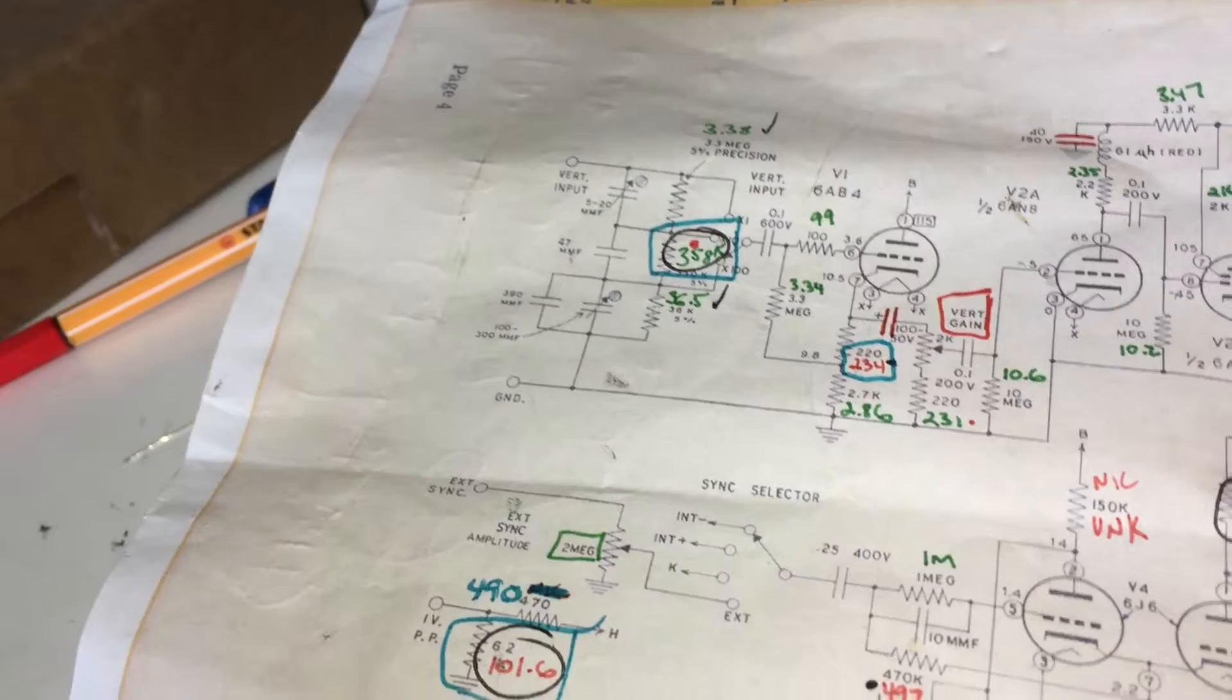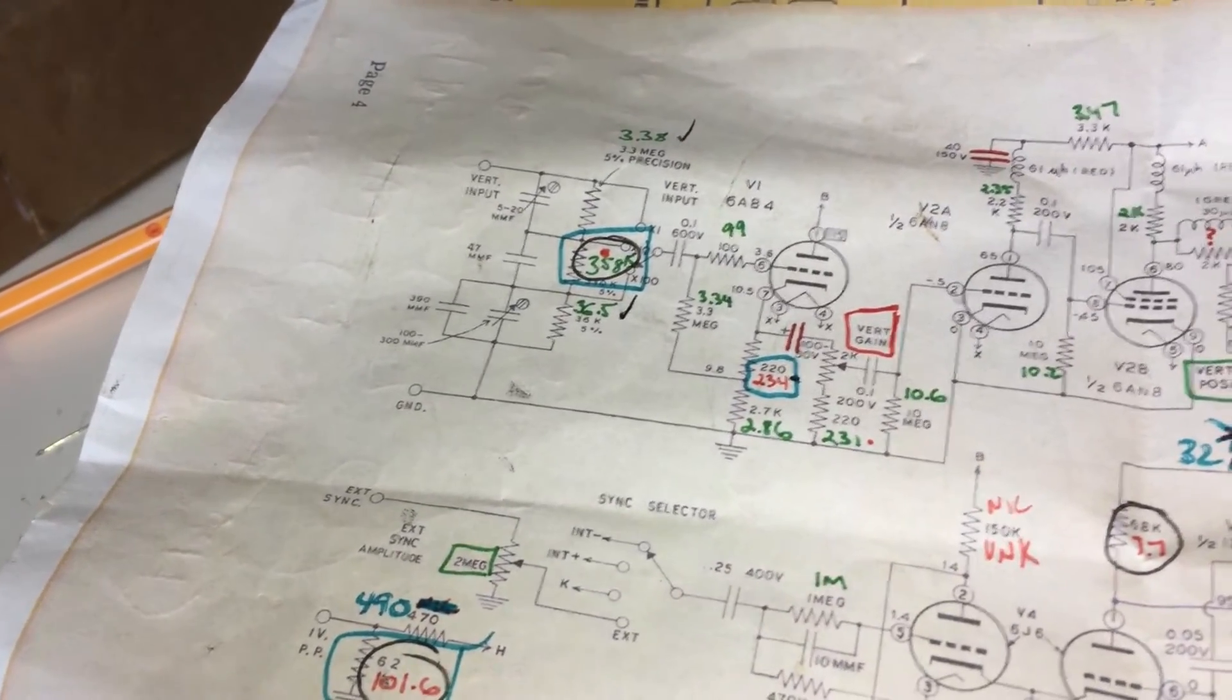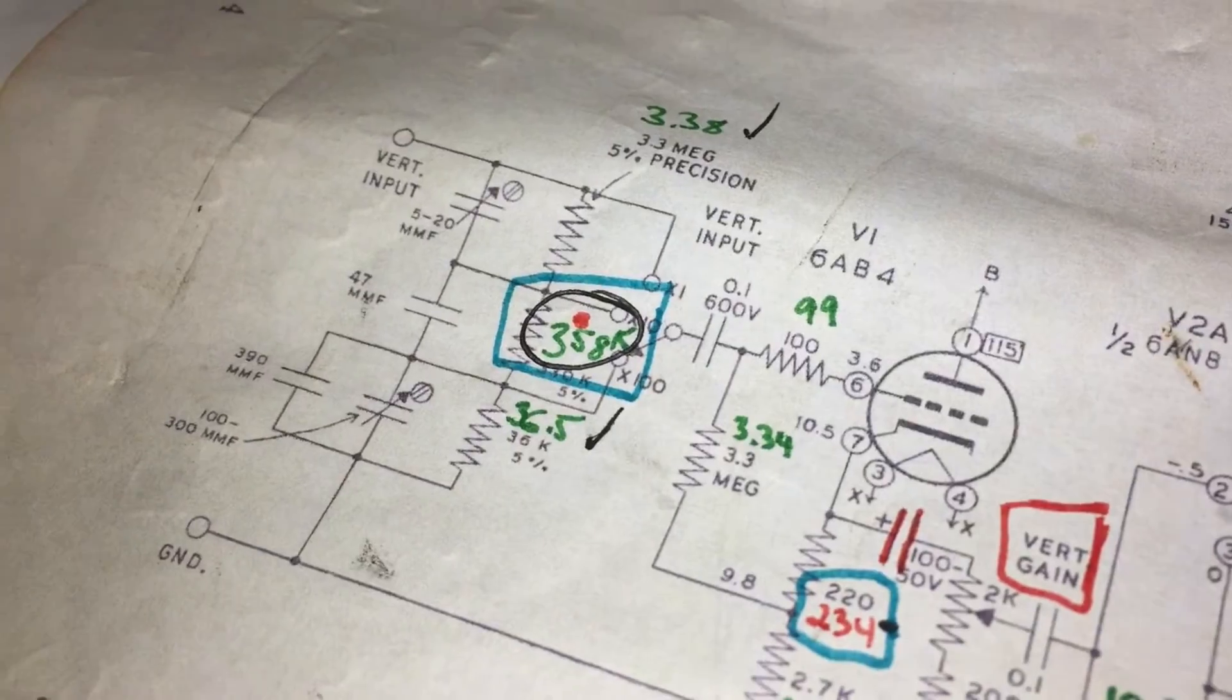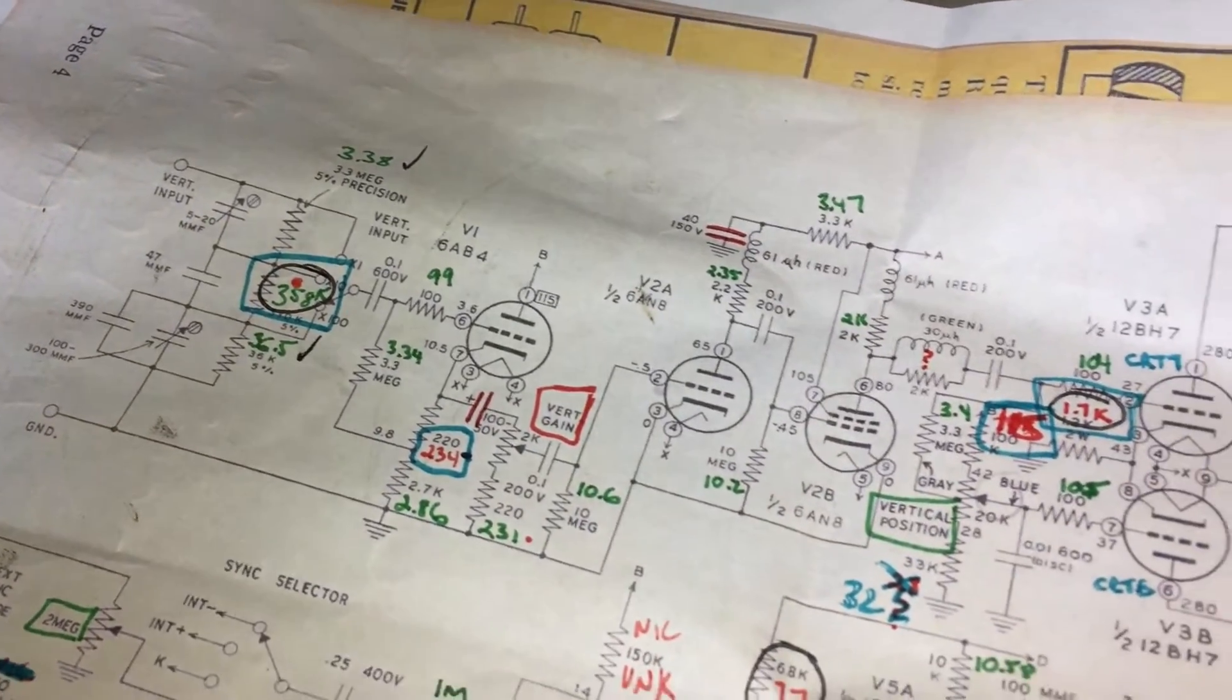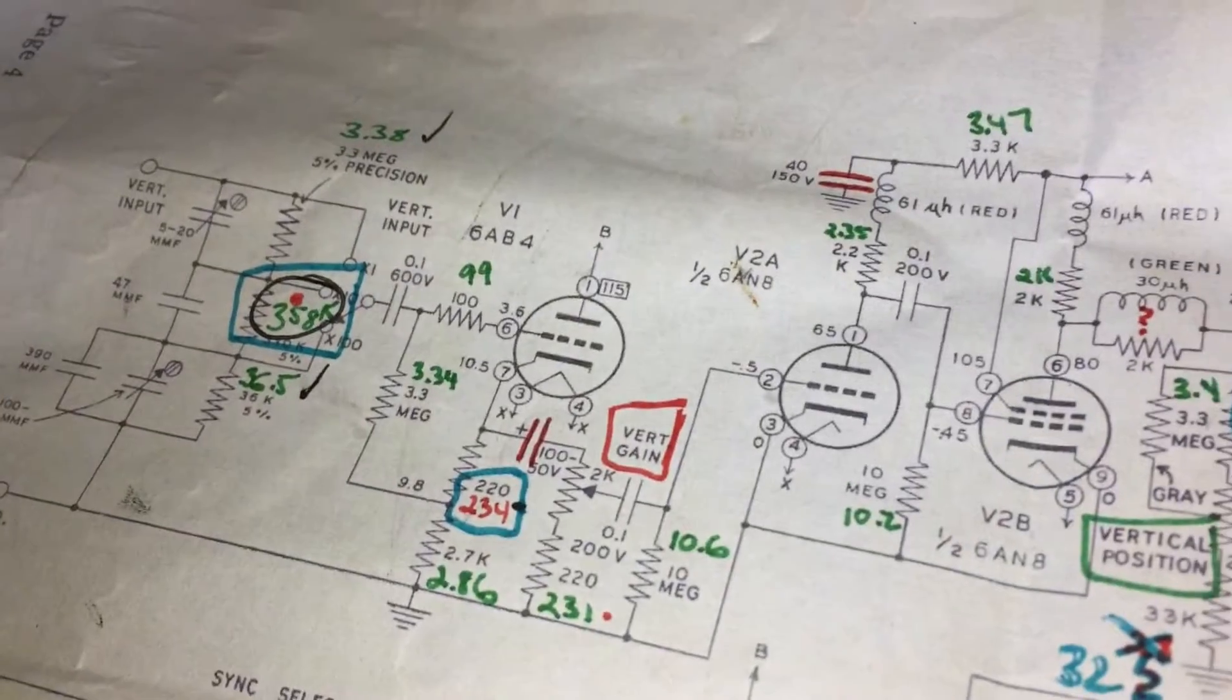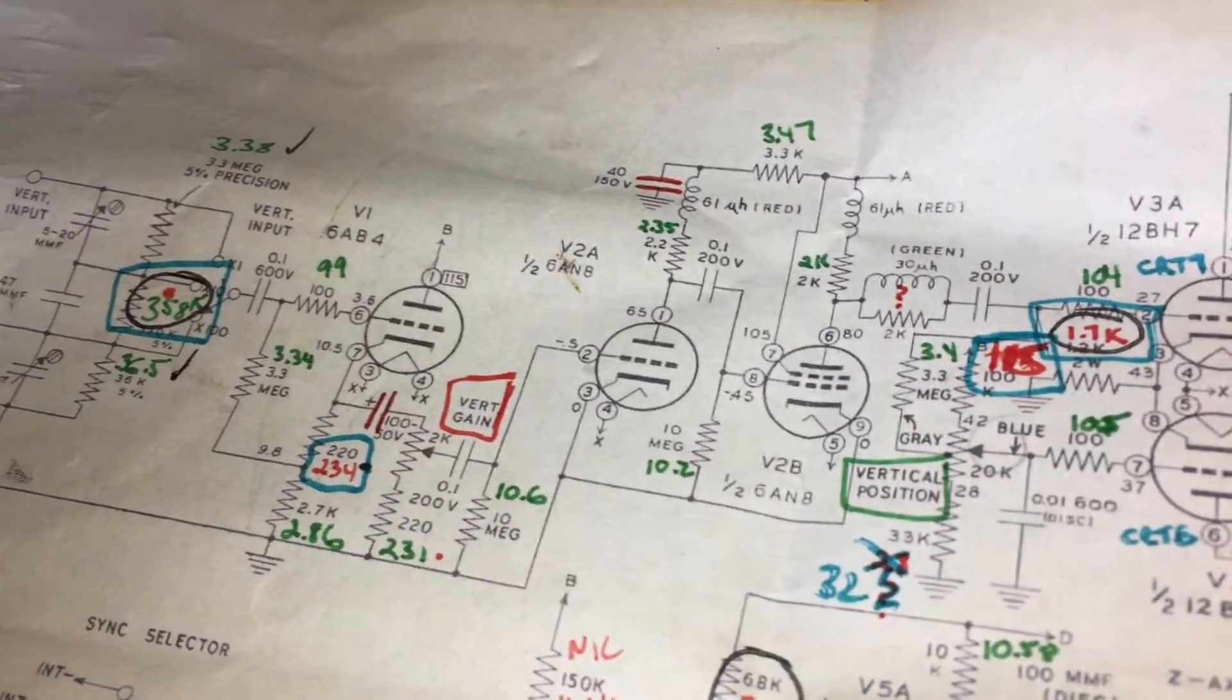So here we are, well into the resistor replacement portion of the project. As I showed earlier, we've gotten that precision resistor swapped out there at the trimmer capacitors over here on this side of the unit. I was able to remove some of the resistors that were untestable in circuit. The ones that were fixed have blue now wrapped around them to show that they're fixed. Vertical gain obviously has not been fixed because that's a pot. I'll be dealing with that later.